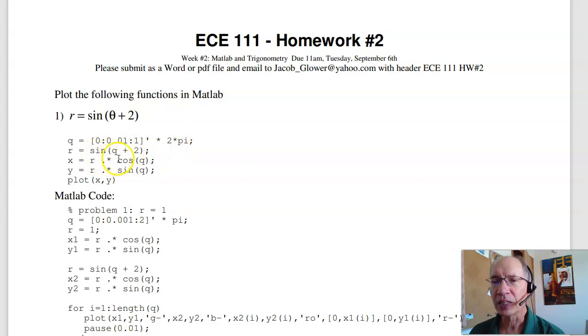If my function is r = sin(θ) + 2, I've got to convert to Cartesian coordinates. So x is r*cos(θ), y is r*sin(θ). And note, I've got to use that dot notation. That tells MATLAB this isn't a matrix multiply, that's element by element.